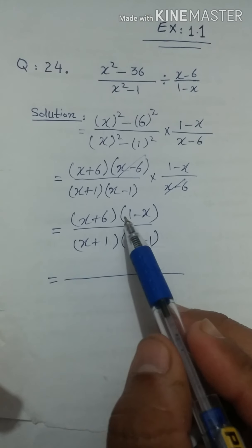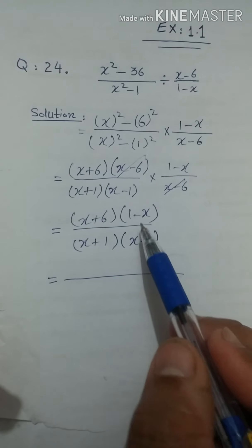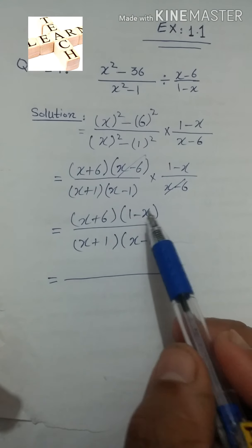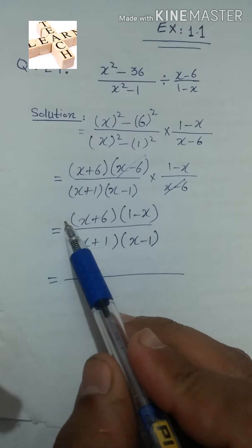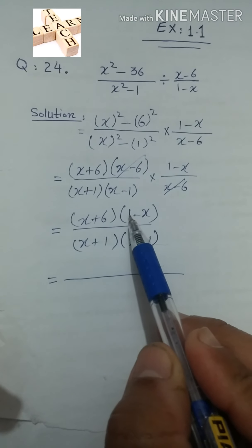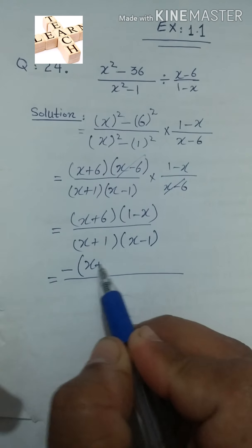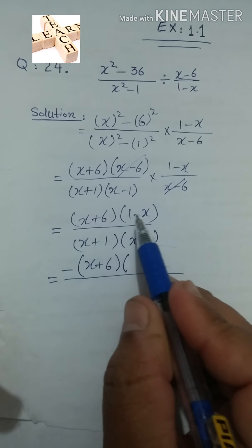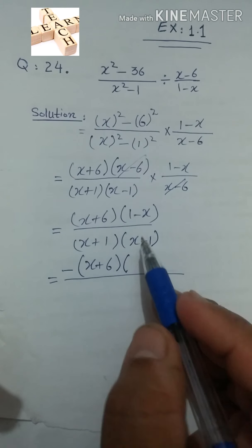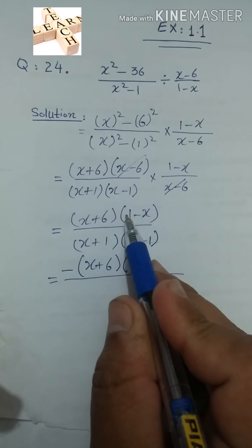अब हम देखेंगे क्या cancel हो सकता है। ऊपर हमारे पास 1 minus x है, लेकिन नीचे x minus 1 है। एक सूरत हो सकती है कि 1 minus x को हम x minus 1 बना लें — इस तरह बना सकते हैं अगर minus को हम बाहर common निकाल लें। Minus से multiply करने पर 1 minus x बन जाएगा minus(x minus 1)। यानि 1 के साथ plus था वो minus बन जाएगा, और x के साथ minus था वो plus बन जाएगा।